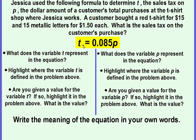Alright, so the equation we're given is that T equals 0.085P. So our first question is what does the variable T represent in the equation? Well if we go up here it tells us that T is the sales tax. So we're going to fill this in, sales tax. It's very important when you're given equations for situations that you're able to identify the different parts so that you can make sure that that equation makes sense and that it matches the situation. Then it says to highlight where the variable T is defined in the problem above. So you can highlight it. If you don't have a highlighter you can underline it. But it says T is the sales tax.